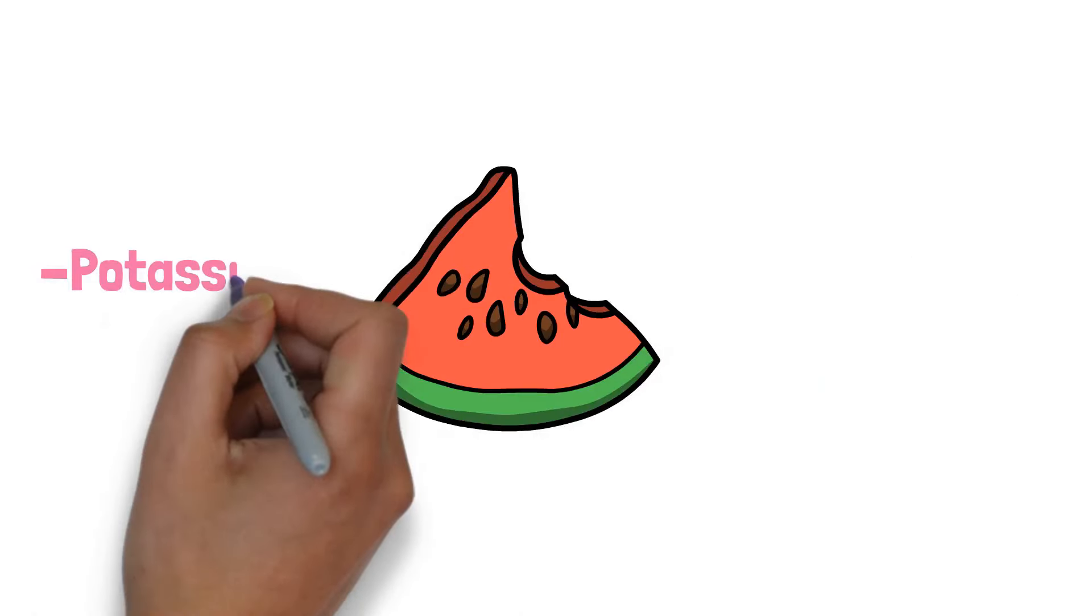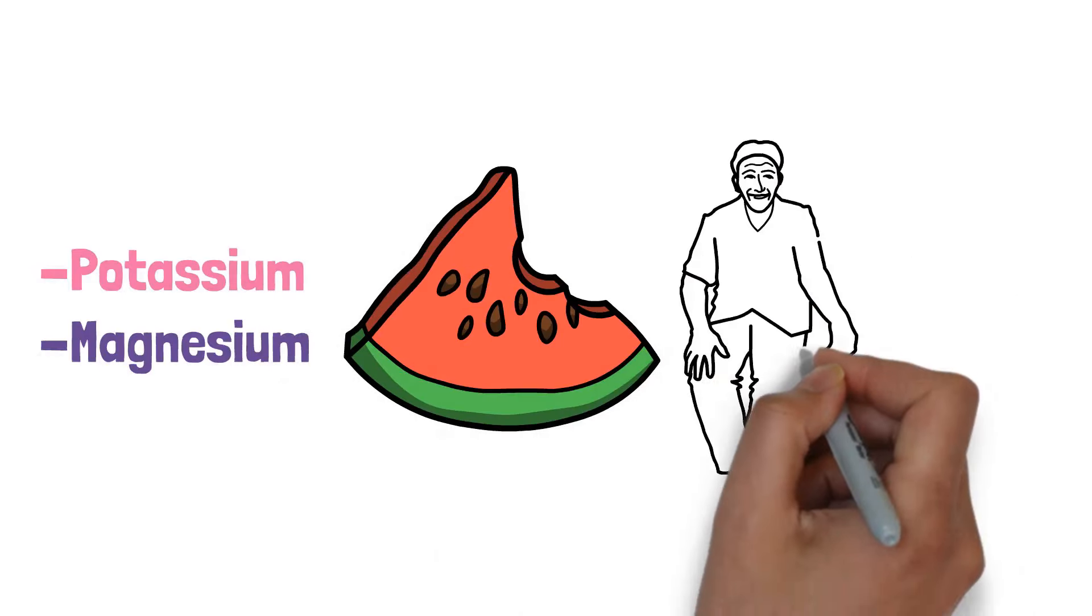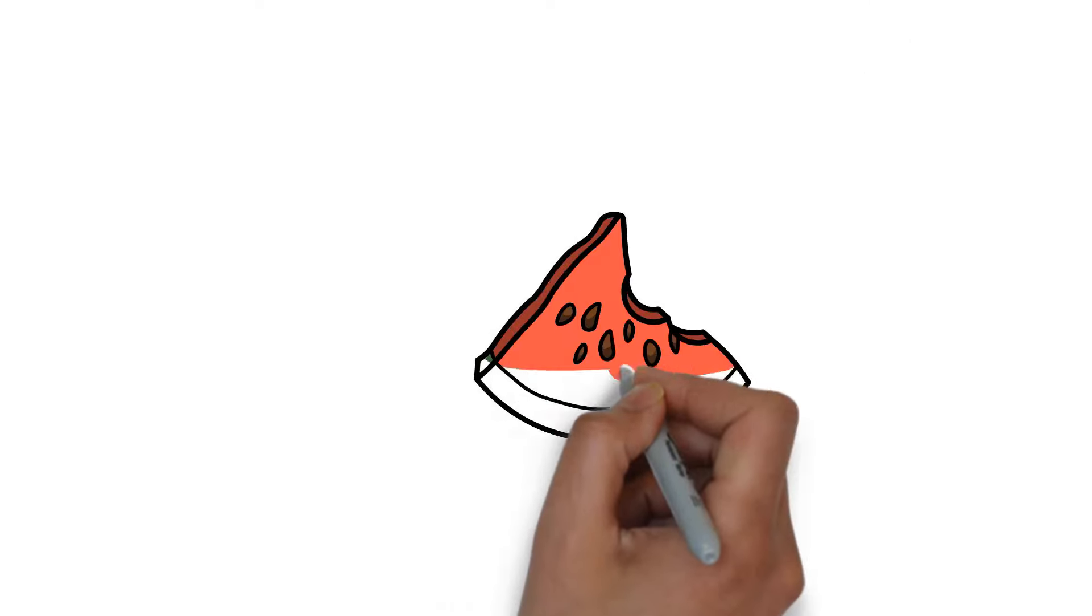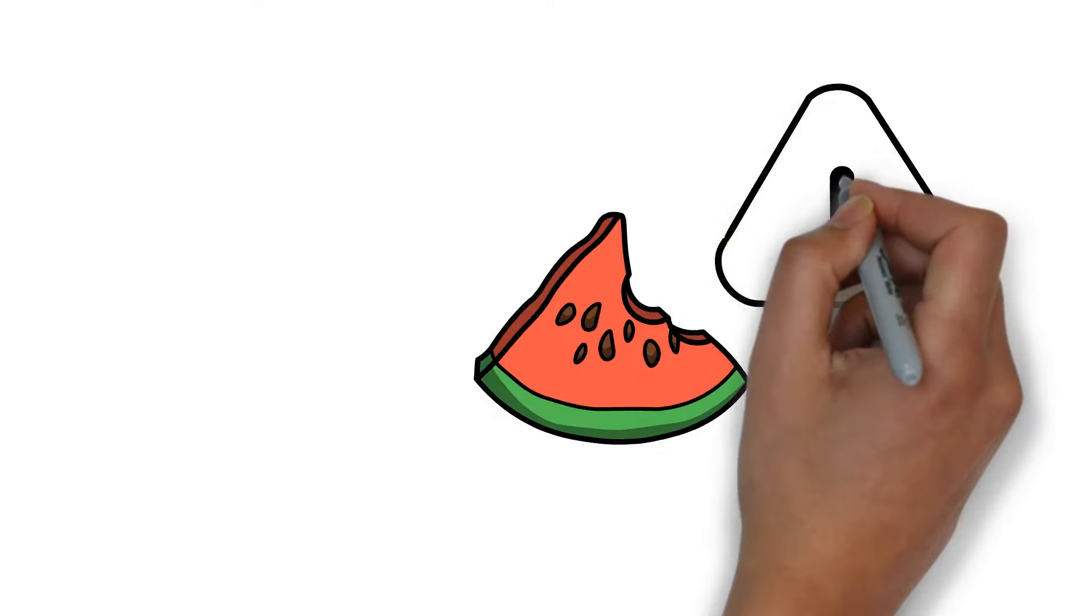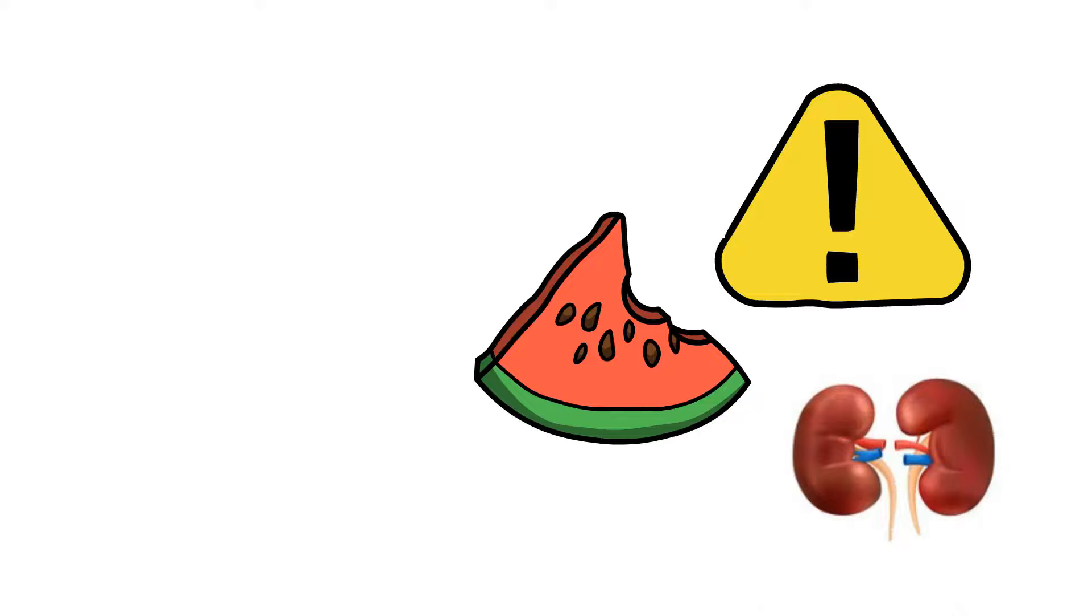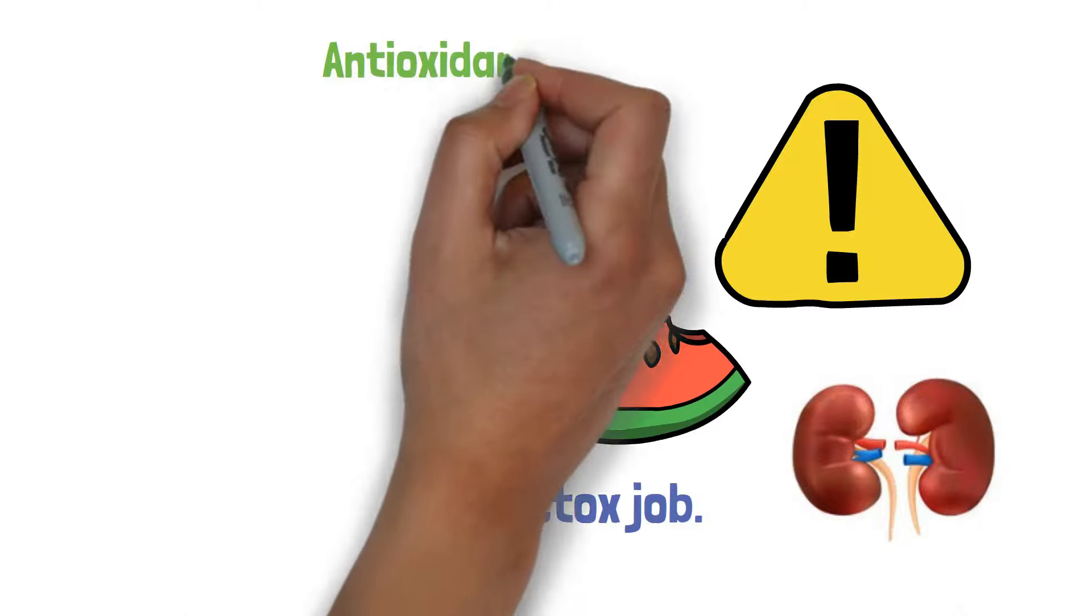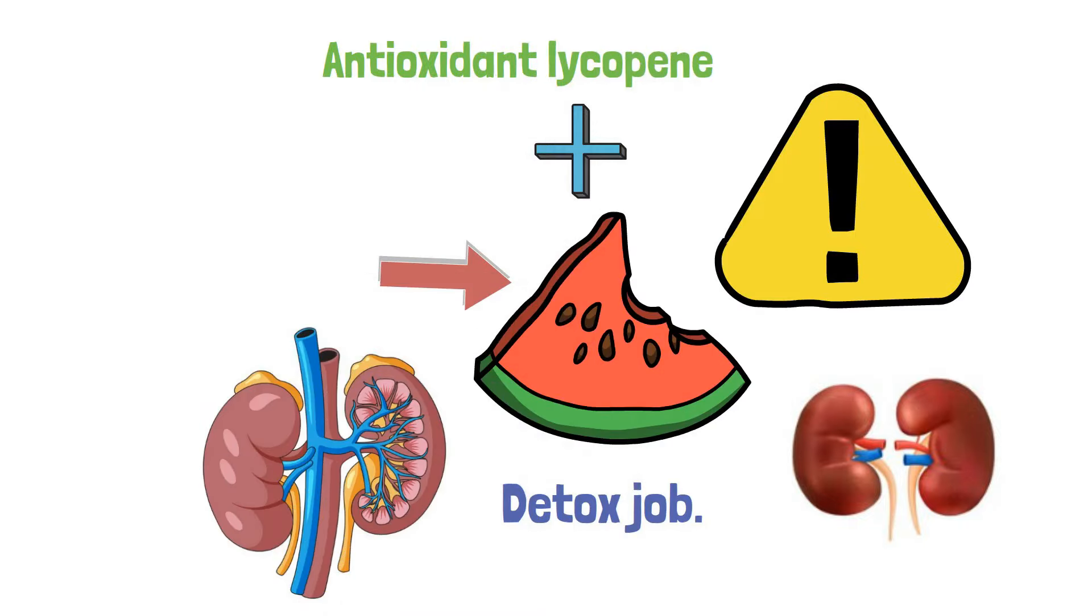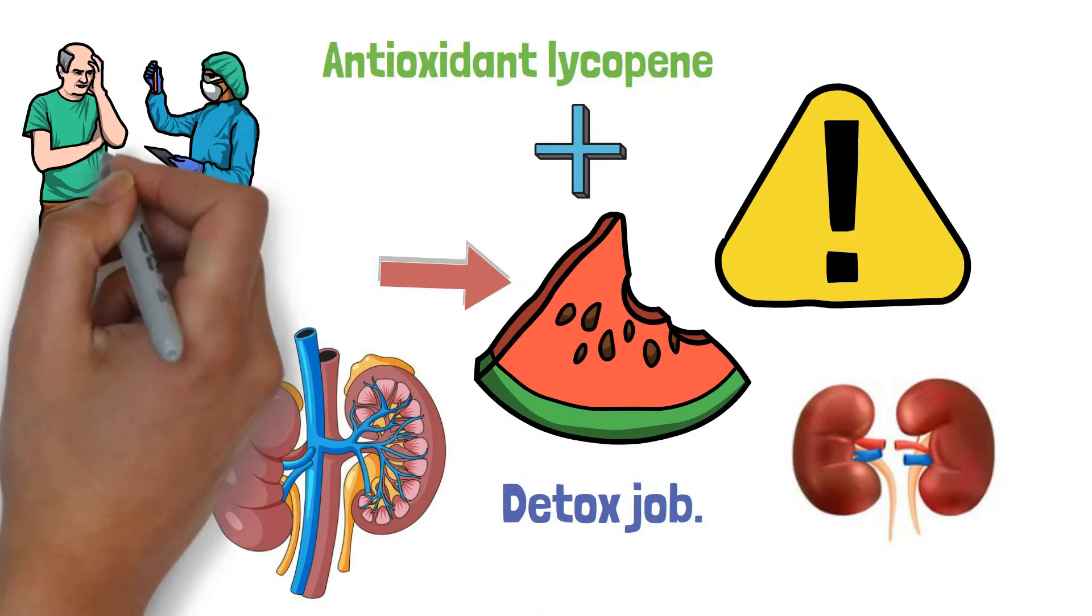Watermelon is packed with potassium and magnesium which are superheroes for your blood pressure. Its high water content helps flush out those unwanted toxins, aiding your kidneys in their daily detox job. Plus the antioxidant lycopene which gives watermelon its vibrant color supports kidney function and helps ward off disease.